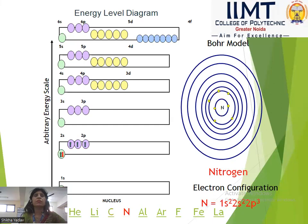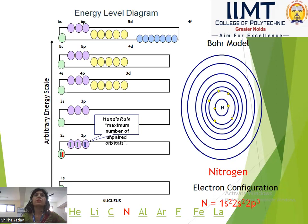Next is nitrogen. In the first shell: 1s², 2 electrons. The outermost electrons are in 2s² and 2p³, giving 5 electrons in the outer shell.